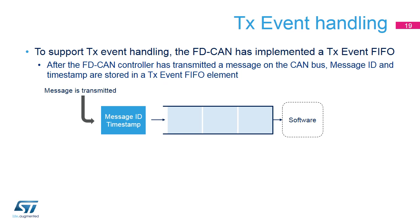To support TX event handling, the FDCAN has implemented a TX Event FIFO. The purpose of the TX Event FIFO is to decouple handling of transmit status information from transmit message handling. A TX buffer holds only the message to be transmitted, while the transmit status is stored separately in the TX Event FIFO. This has the advantage, especially when operating a dynamically managed transmit queue, that a TX buffer can be used for a new message immediately after successful transmission — there is no need to save transmit status information before overwriting that TX buffer. In case a TX event occurs while the TX Event FIFO is full, this event is discarded and an interrupt flag is set.